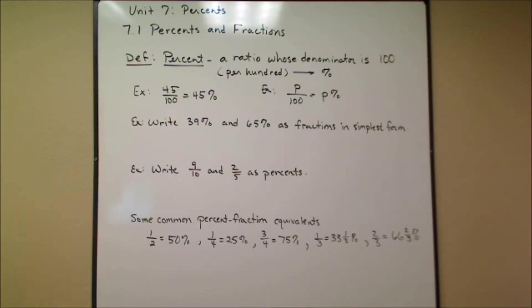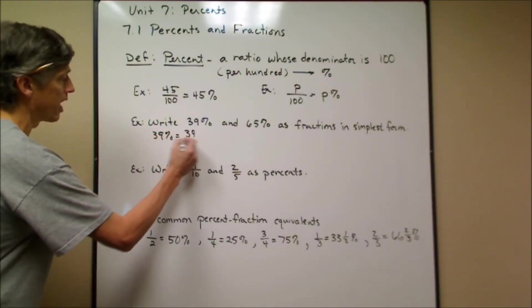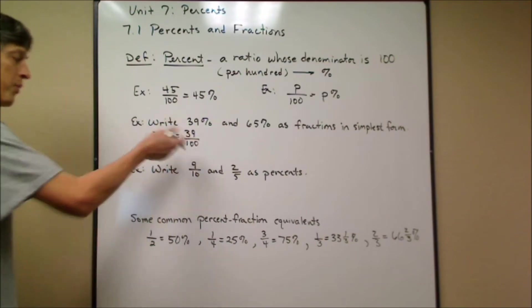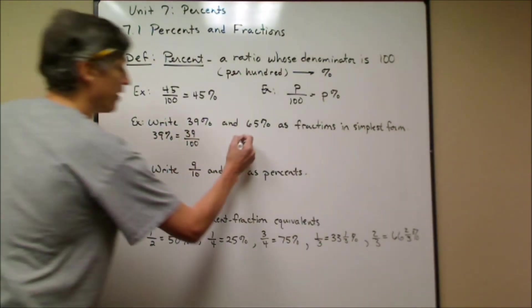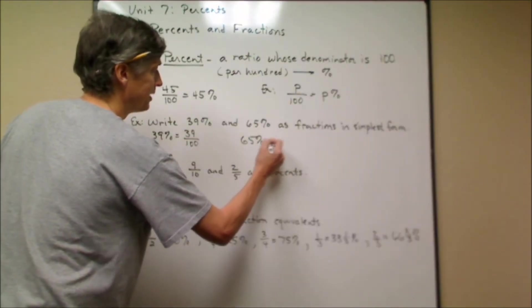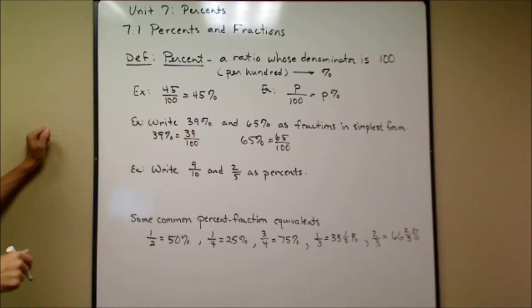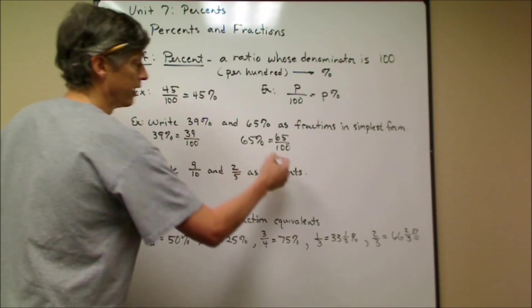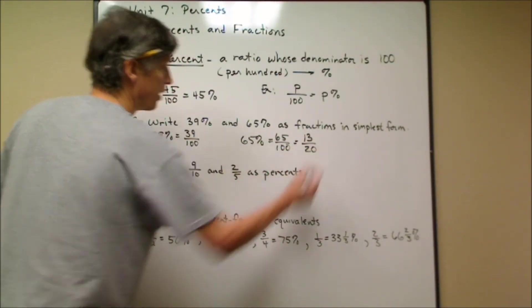Now let's do a couple quick examples where we change percents and write them as fractions. We're going to simplify. 39% means 39 out of 100. 39 over 100 does not simplify anymore because there's no common factors greater than one. 65% means 65 per 100. This one as a fraction does simplify. I can divide top and bottom by 5: 5 goes in the top 13, 5 goes in the bottom 20, and I would write it as 13 over 20.